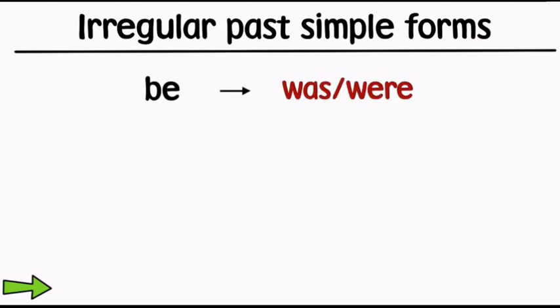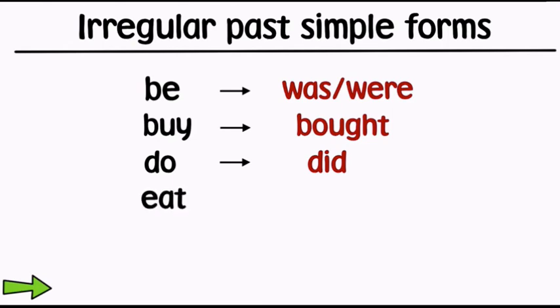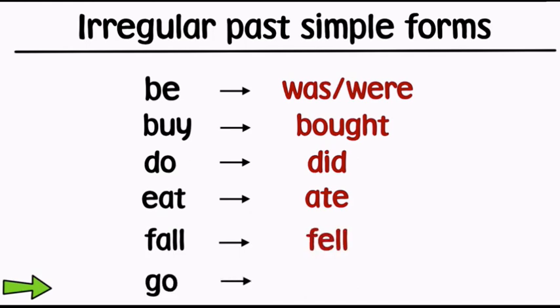Be: was, were. Buy: bought. Do: did. Eat: ate. Fall: fell. Go: went.